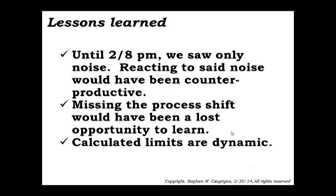So to summarize lessons learned from the manual exercise: until we saw that first signal, we're seeing only noise and reacting to that noise is counterproductive, it's costly. Missing that process shift is a tragic lost opportunity to learn something important. And the other lesson learned is that these calculated limits, the upper and lower limits, they're dynamic. As our process changes, hopefully it doesn't, but processes always change over time. It's entropy. We have to be vigilant and recalculate our limits based on some good basic logic.